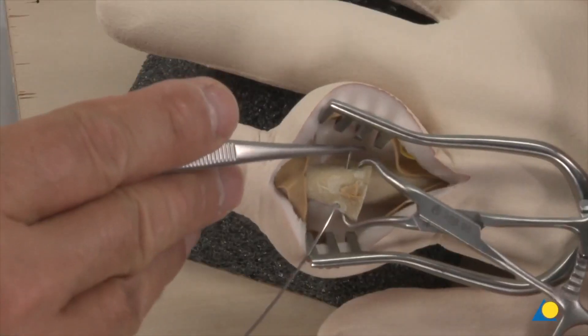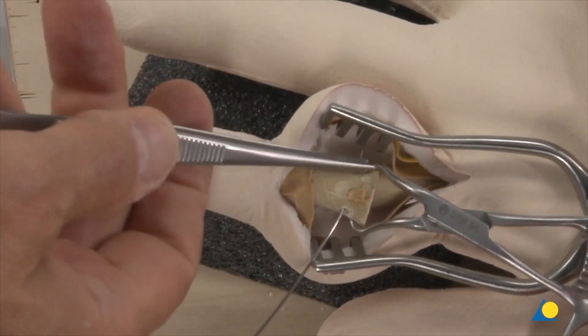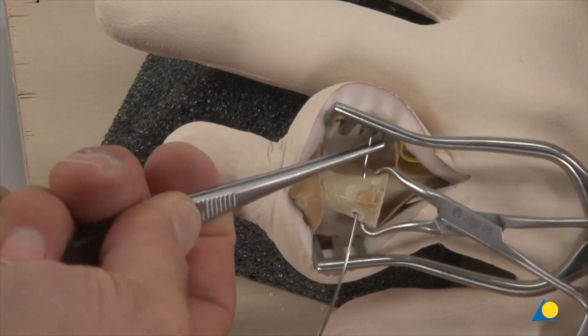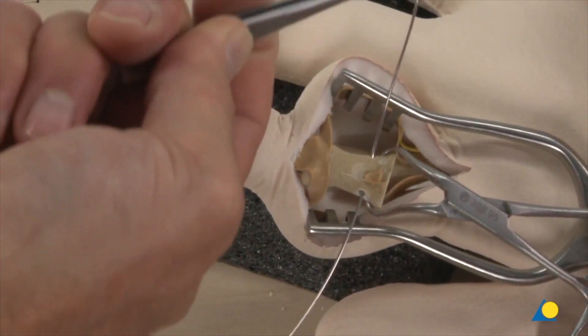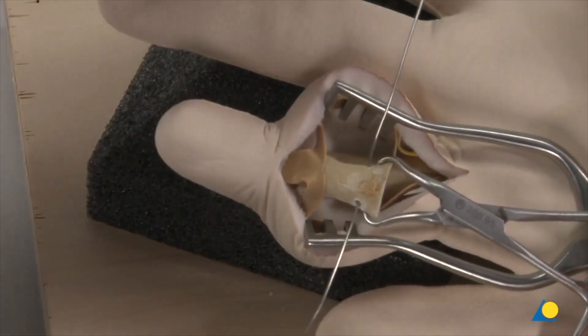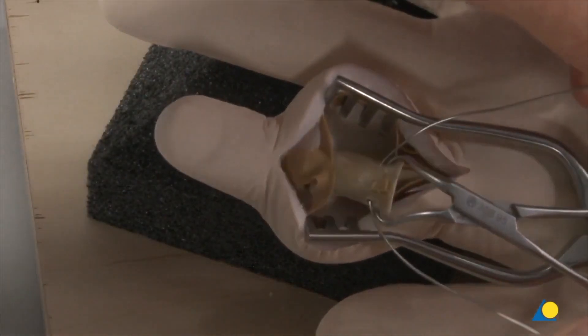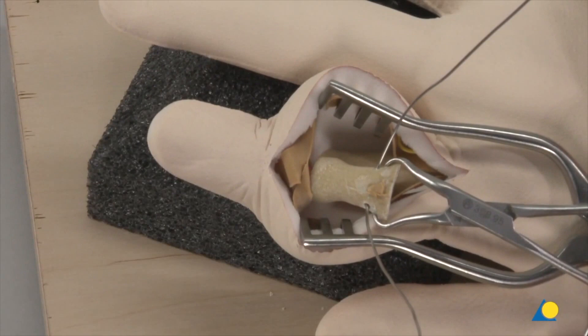The circlage wire is straightened to facilitate advancement through the drill hole and is then inserted. On the opposite side, the circlage wire is taken underneath the extensor apparatus, taking care not to injure the digital nerve and artery.